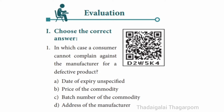Choose the correct answer. Question 1: In which case can a consumer NOT complain against the manufacturer for a defective product? A. Date of expiry unspecified, B. Price of the commodity, C. Batch number of the commodity, D. Address of the manufacturer. The correct answer is C — Batch number of the commodity.